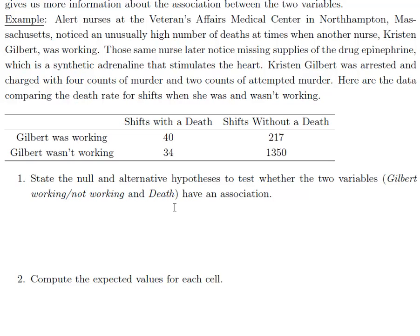Alright, so this example has to do with a hospital and whether or not Gilbert was working. So Gilbert's a nurse. And the other nurses noticed some missing drugs. And so they wanted to see if a patient's more likely to die when Gilbert was working. So there's two variables. Whether or not Gilbert was working is one variable. And death is another variable. Death on a shift. So we are going to do a chi-square independence. And that will tell us whether or not someone dies on a shift is related to whether or not Gilbert was working.